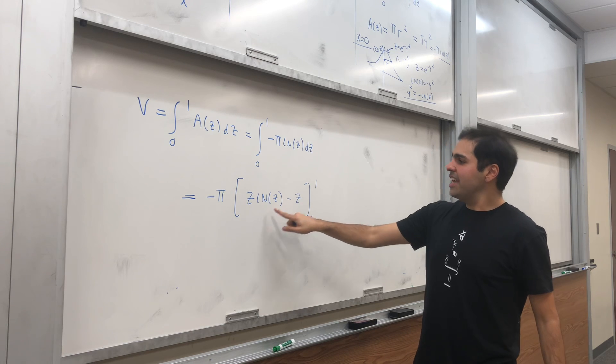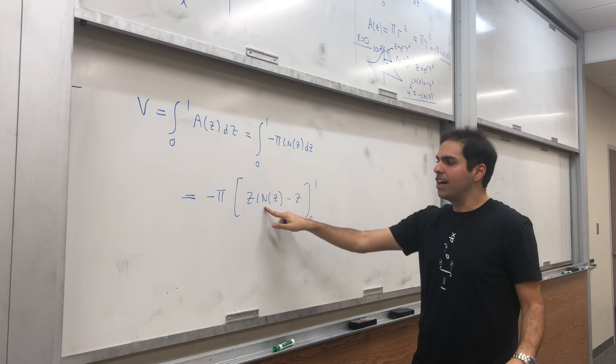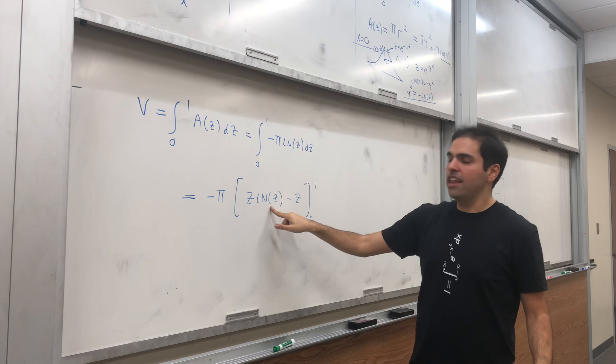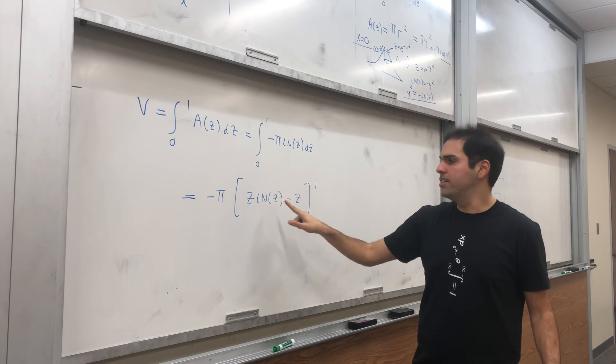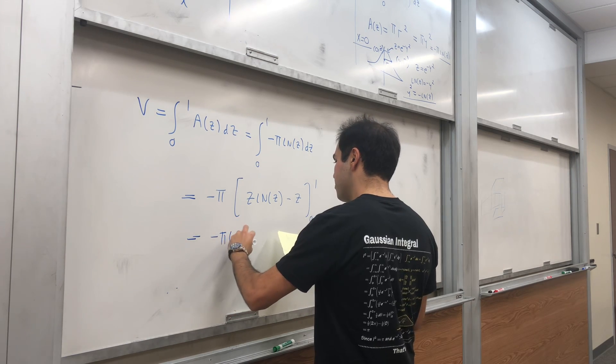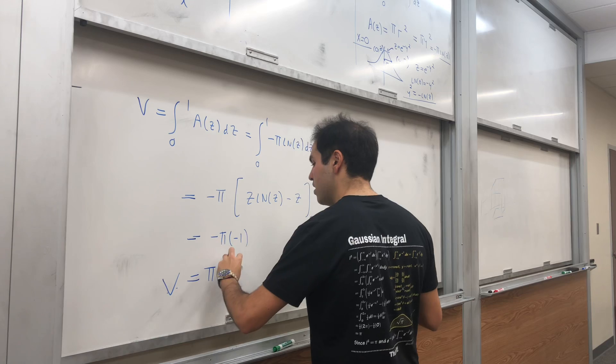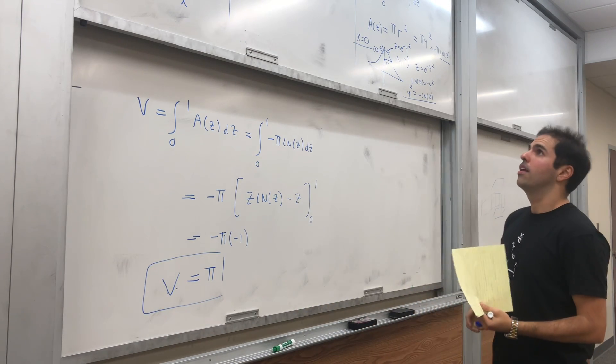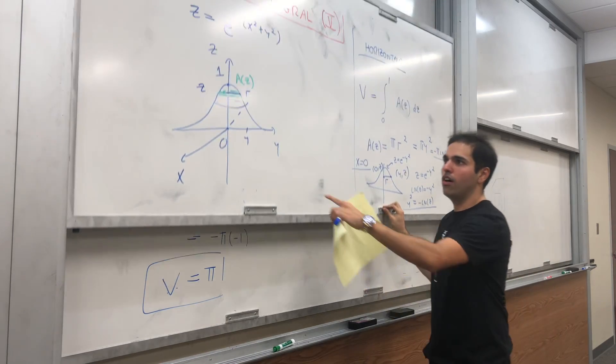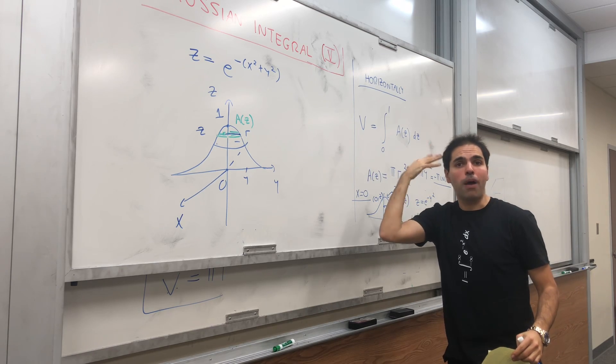As z goes to 0, z ln(z) goes to 0 by l'Hôpital's rule. At 1, we get 1·ln(1) - 1 = -1. So we get -π times -1, which equals π. So on the one hand, if you calculate the volume using horizontal slices, you get π.